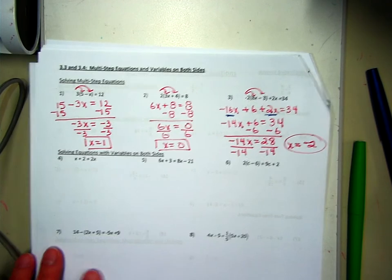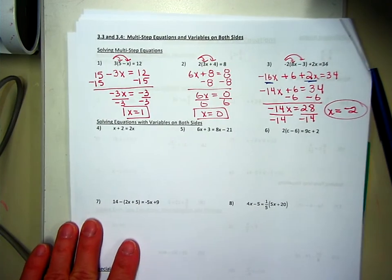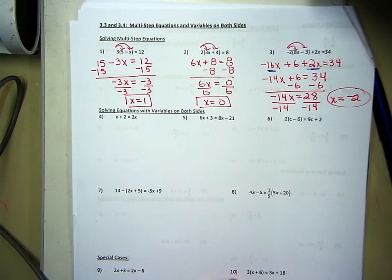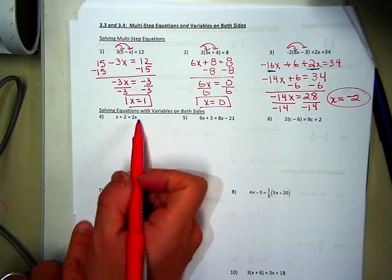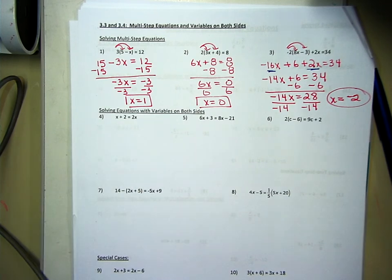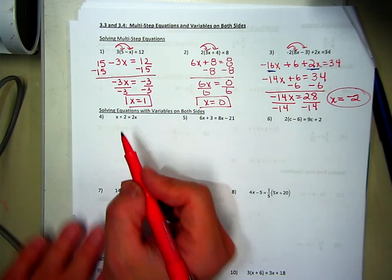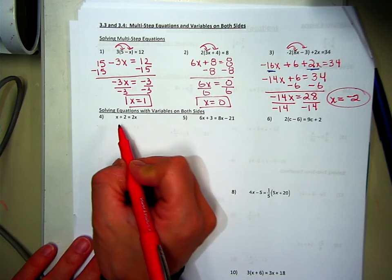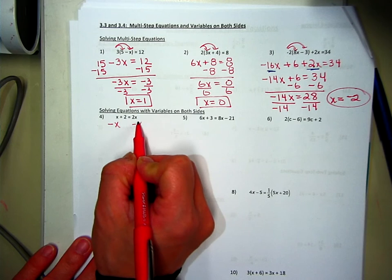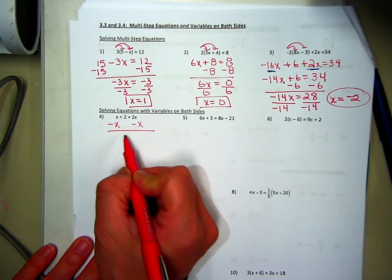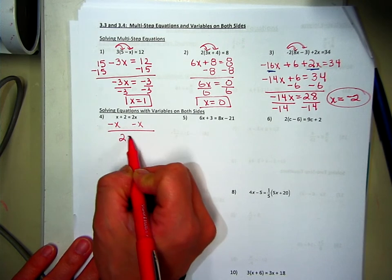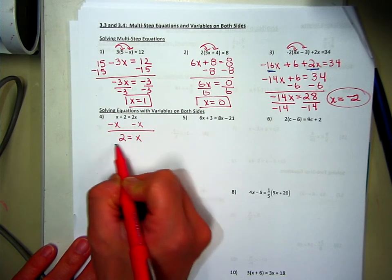Now let's try a problem that has x's on both sides. On number 4, notice that you have x's on both sides, but go through your steps — there's nothing to distribute and I don't have like terms on either side. Go ahead and move all the x's to one side; it doesn't matter which side. I'm going to subtract the x, so I have 2 equals 1x, or just x, and you're done.